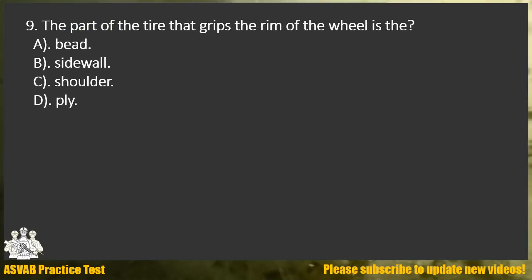Question 9. The part of the tire that grips the rim of the wheel is the: A. Bead. B. Sidewall. C. Shoulder. D. Ply.